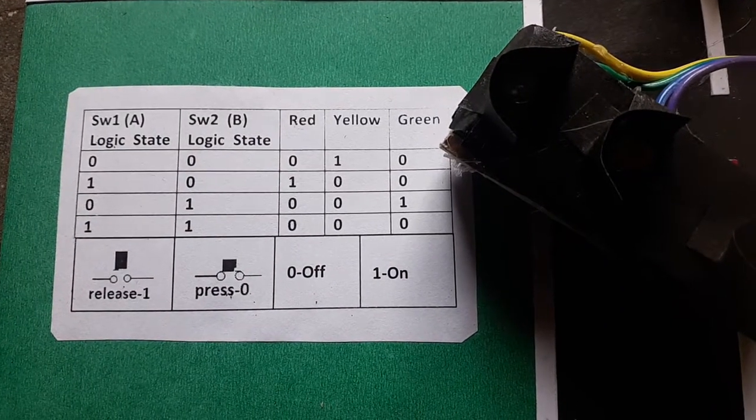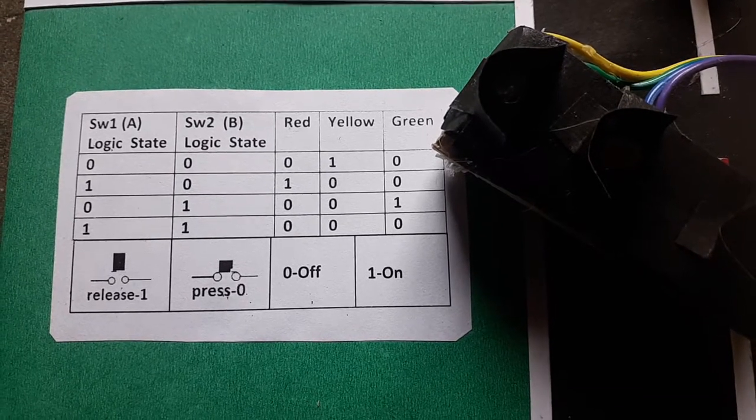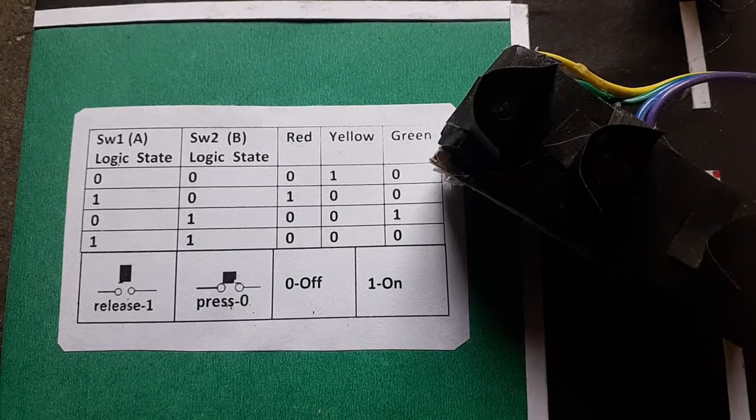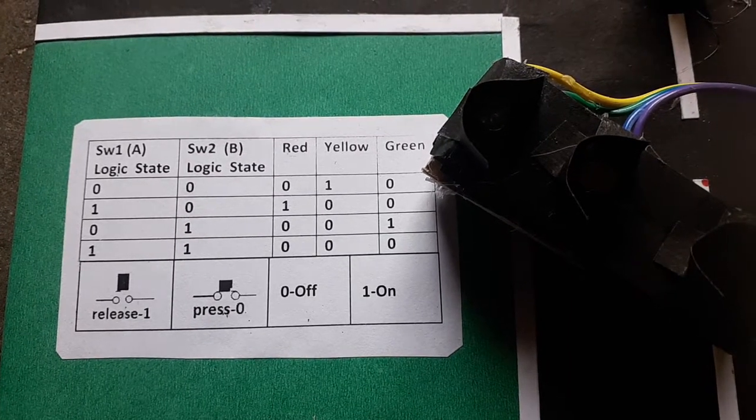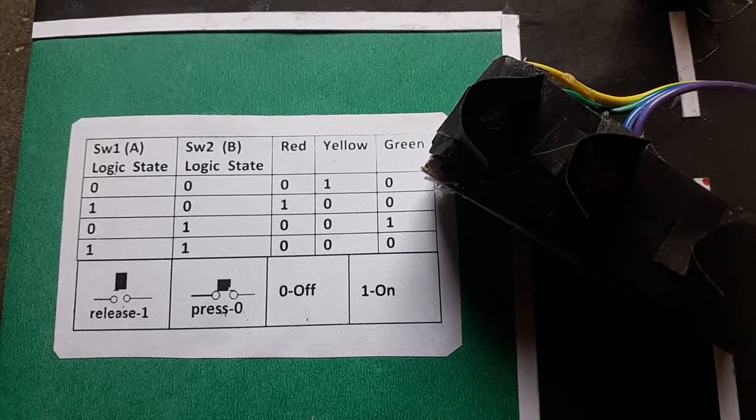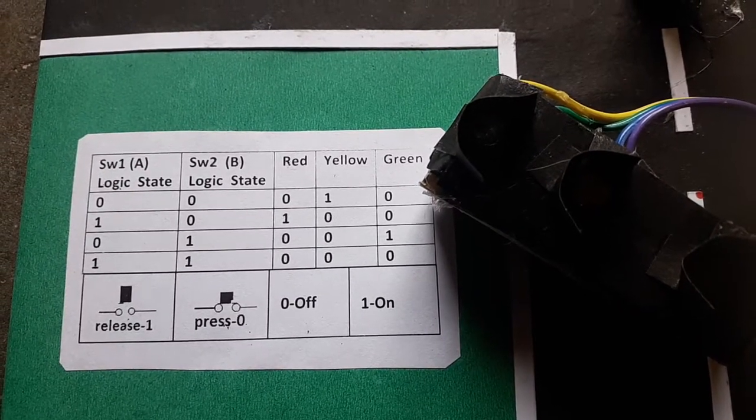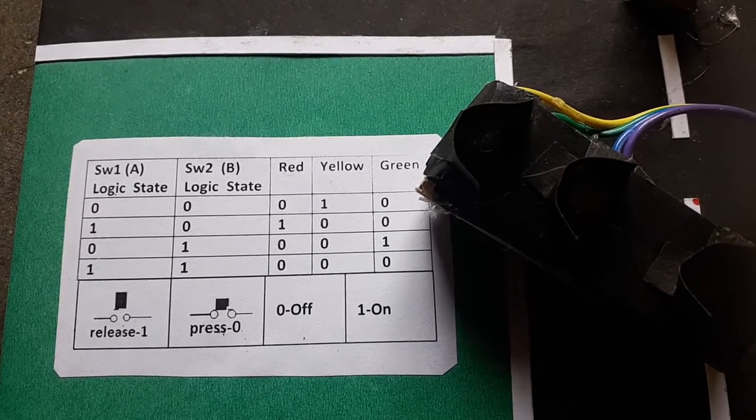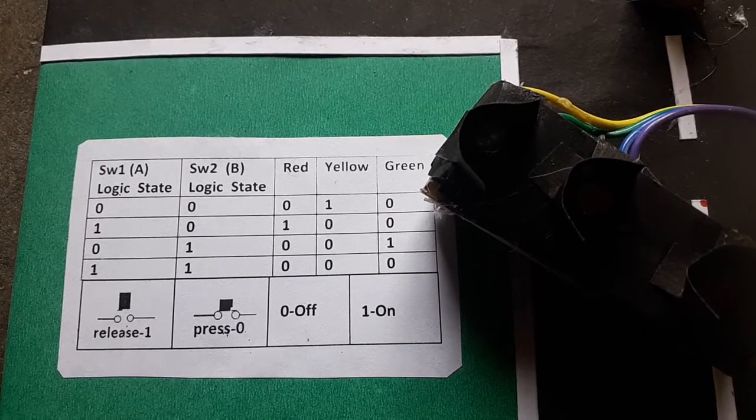When both the switches are pressed that is 0-0, yellow LED will become high. When switch 1 is not pressed and switch 2 is pressed, red LED will glow. When only switch 1 is pressed, green LED will glow. When both the switches are not pressed, no LED glows.